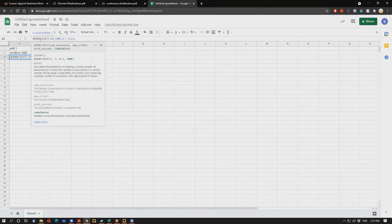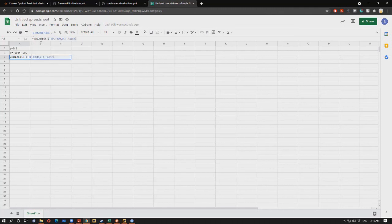I'm looking for probability x being exactly equal to 100, so I will put false here. This is given as 4.2%, which suggests that this result is unusual. However, this is not true.